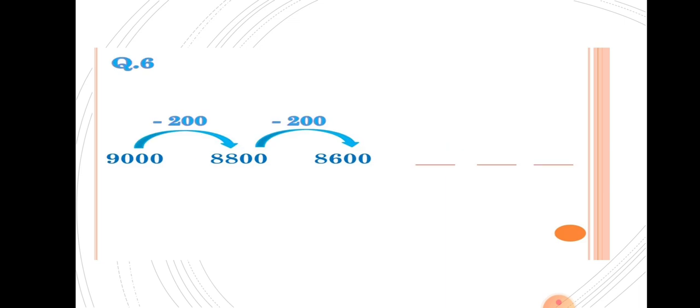Next example: 9000, 8800, 8600. From 9000 to 8800, decrease by 200. From 8800 to 8600, decrease by 200. So we have to subtract 200 to get the next number. 8600 minus 200 equals 8400. Then 8400 minus 200 equals 8200. Then 8200 minus 200 equals 8000. Okay, thank you.